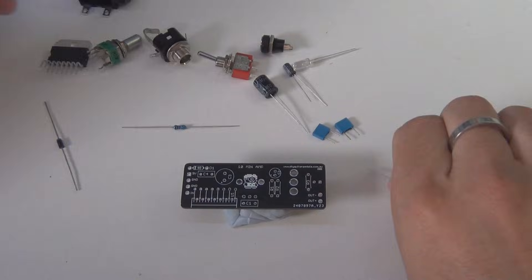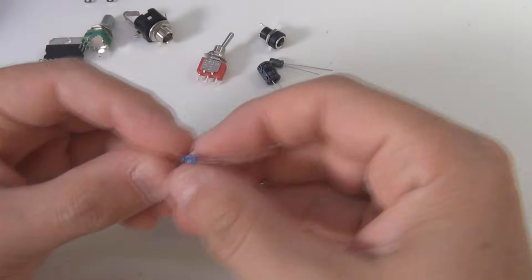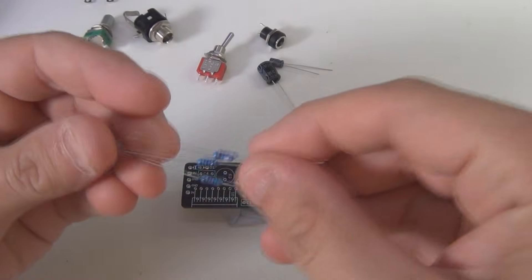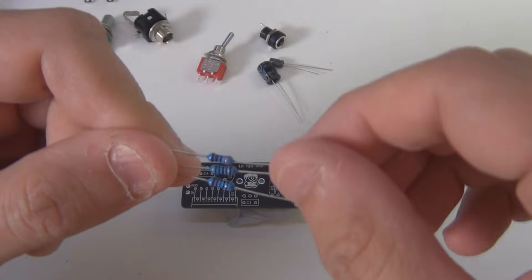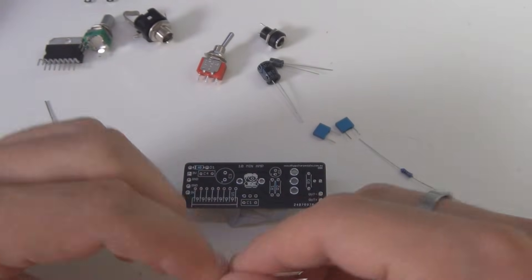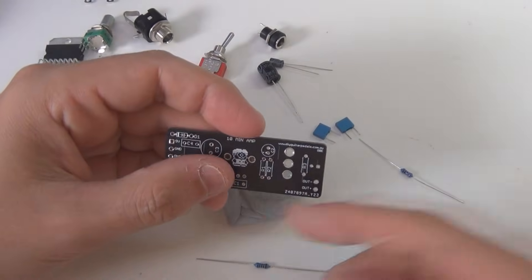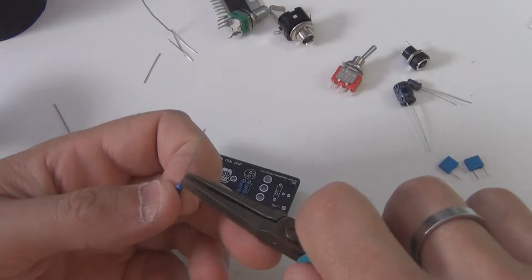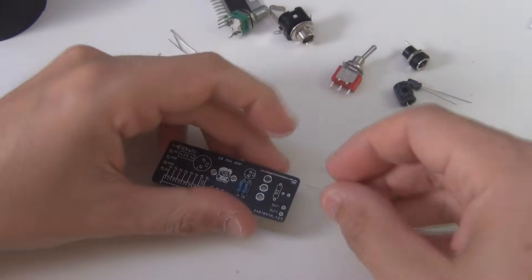We can see on the build doc that R1 and R2 are 10K resistors. One of these resistors is actually a different value, so it's quite easy to work out, you don't need a multimeter. The one that's the different value is 3.3K, so just put that one aside and do the two 10Ks first. So 10K in position R1 and R2, and then the last resistor, the 3.3K resistor, goes in R3.